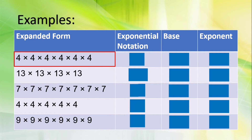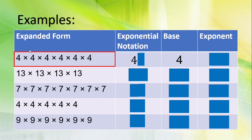In this expanded form, what number is multiplied by itself several times? Correct, it's four. So, four is our base. Now, let's count how many fours in the expanded form: one, two, three, four, five, six. Six is our exponent.